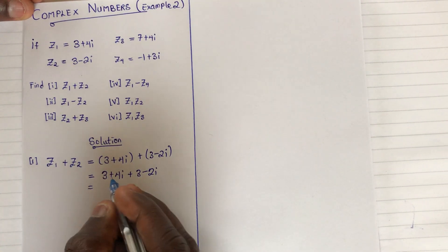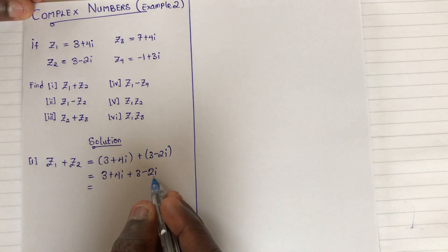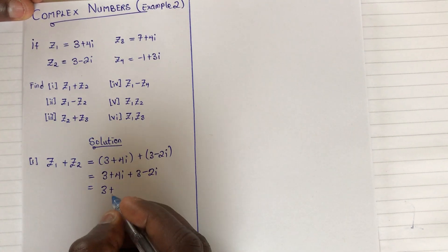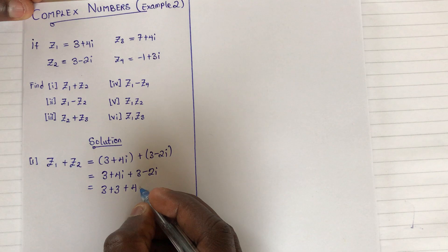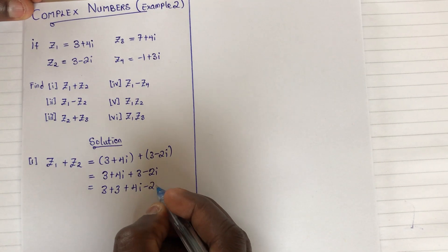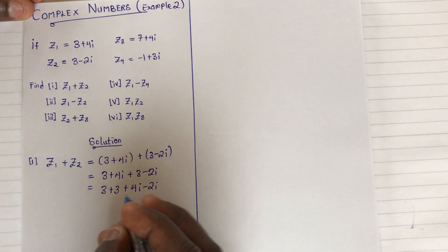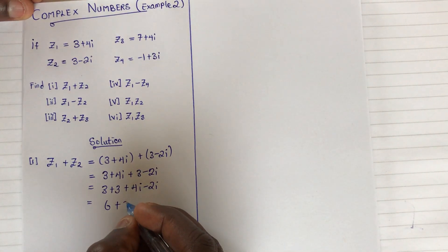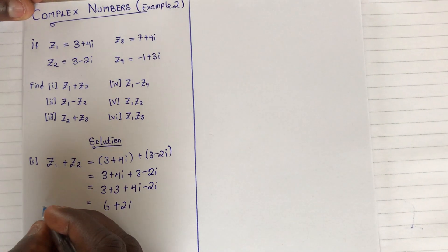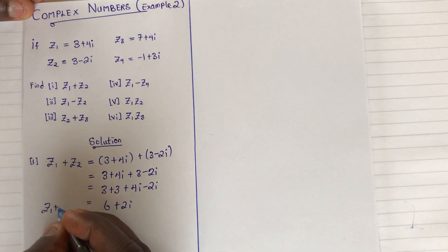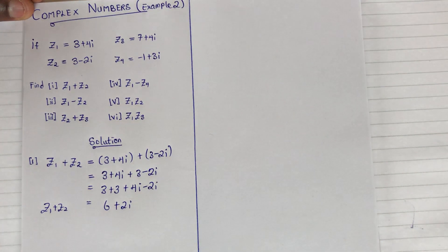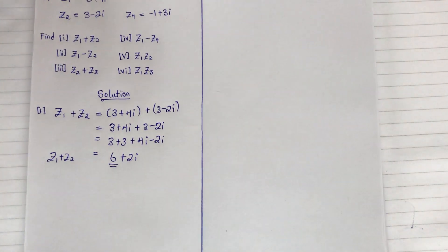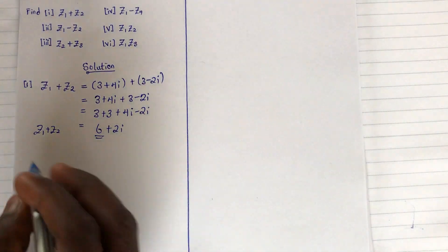We add all terms that are real and all terms that are complex. So we have 3 plus 3, plus 4i minus 2i, which gives us 6 plus 2i. Therefore, z1 plus z2 equals 6 plus 2i.